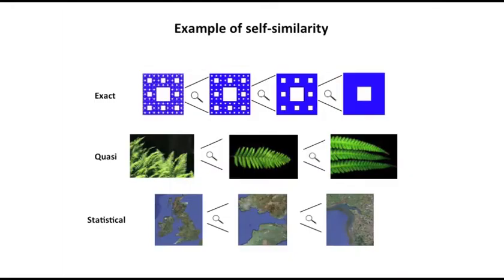A lot of things are fractal in nature. We deal with Euclidean geometry a lot in terms of building buildings and so forth, but nature really uses non-Euclidean geometry. As an example, the top panel is the Sierpinski carpet, and you can see that at every magnification there is self-similarity. Nature itself has developed, for example, a fern or a tree, and when you look at various scales of the fern, it's a very similar type of object.